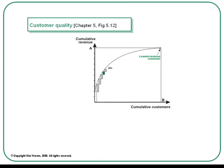Chapter 5 introduces the idea of a customer quality curve. The general point being made here is that building more resources is not the same as having resources that are of good quality. This curve works by stacking up the revenue contributions from the largest customers on the left and progressively smaller customers as you move across to the right. You'll find more information on how this framework is used on pages 267 to 273 and in video class segment 5.2.